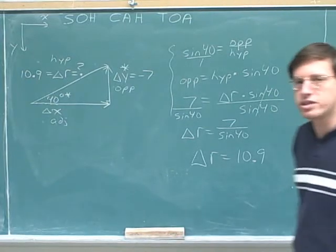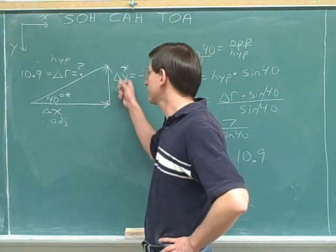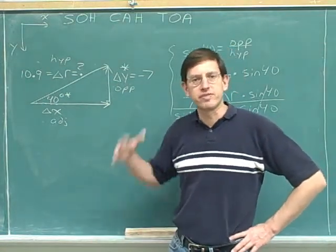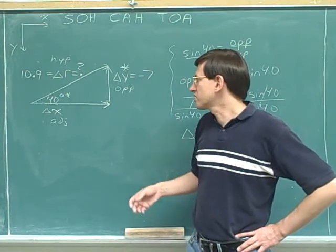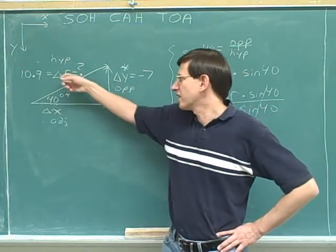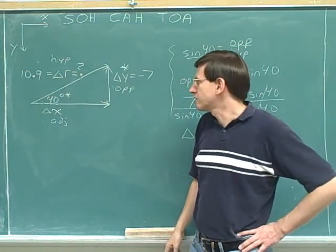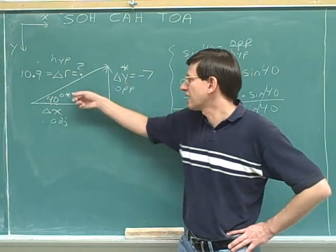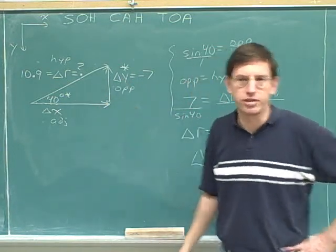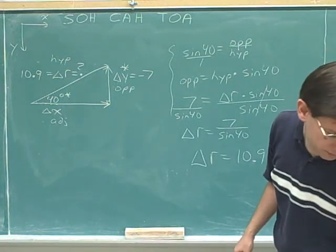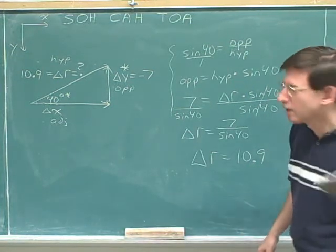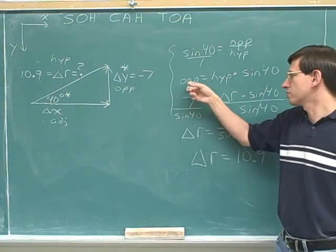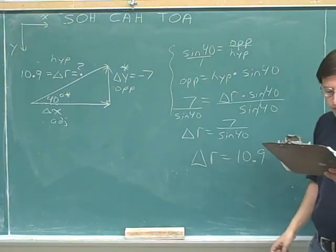All right. Well, this was another example where you were given one of the components, and you had to find the overall vector. Remember that usually you're given the overall vector and you have to find the components. But every once in a while, you might be given one of the components and you have to find the overall vector. It's really the same type of trigonometry problem, because they're both problems where you're given one side and one angle. We saw here that we don't use the negative 7. When we're working with the trig functions, we're working with lengths, which are positive.